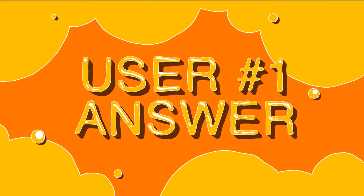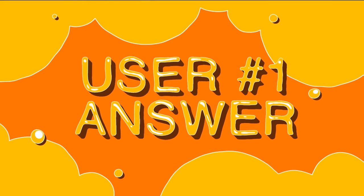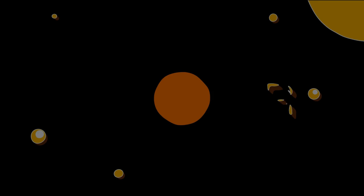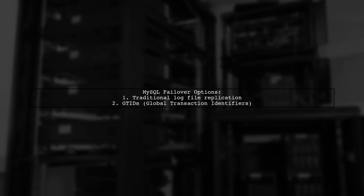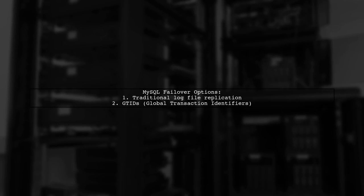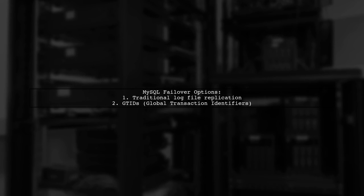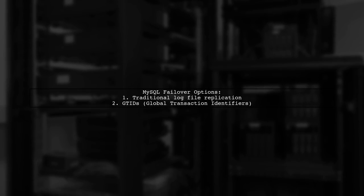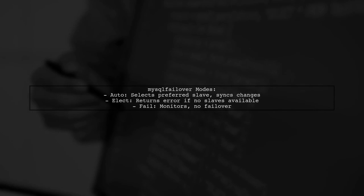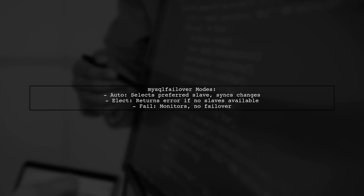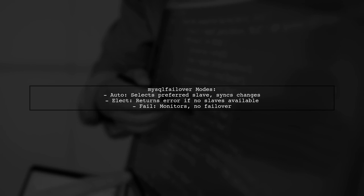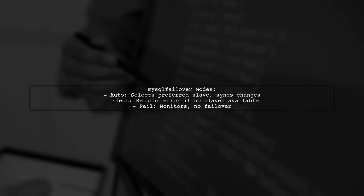Let's now look at a user-suggested answer. To choose a new master in MySQL Failover, you can set up a master-slave architecture using either traditional log file replication or the newer GTIDs method. If you opt for GTIDs, the MySQL Failover utility can help manage failover. The utility has three modes: Auto, Elect, and Fail. In Auto mode, it selects a preferred slave as the new master; if none are available, it picks another slave and synchronizes changes.